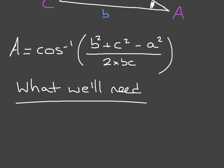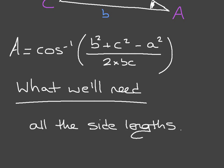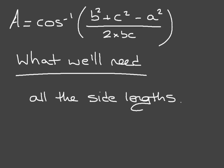To use the cosine rule to find an unknown angle, we'll need all three side lengths. This is quite convenient and easy to remember. As soon as we see a triangle in which we have no interior angle but are asked to find one, provided we have all three side lengths, we can go right ahead and use the cosine rule.